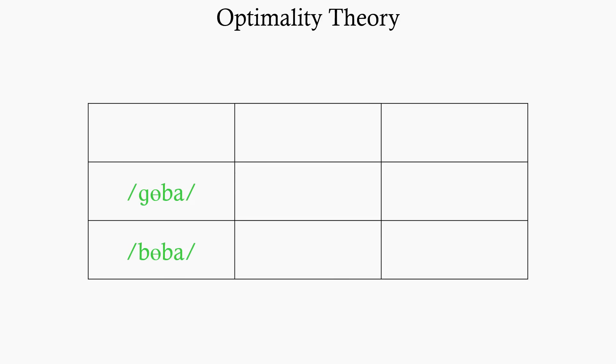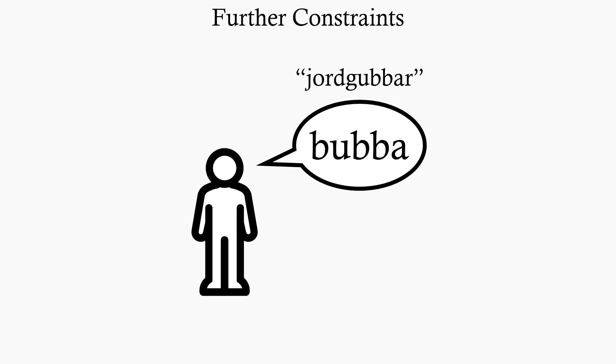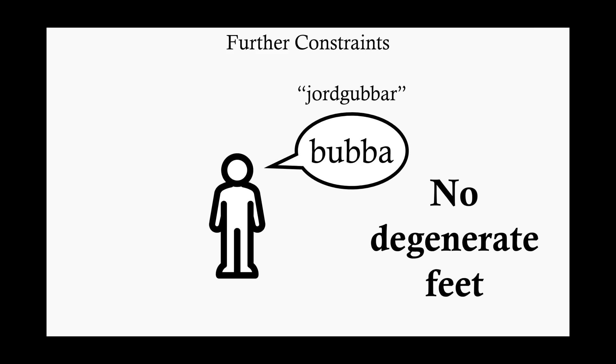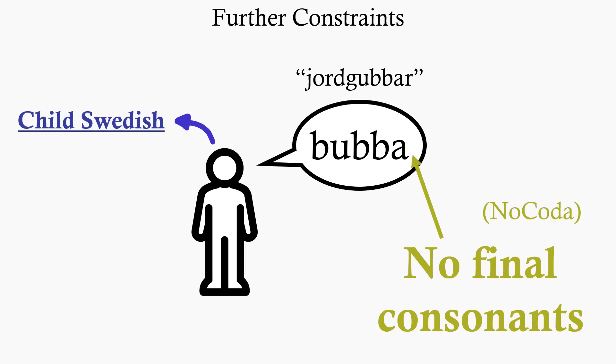In OT, we can use a table to model this, saying that there's actually a constraint in language against the use of every single sound. But the constraint against G for me at this age was ranked higher than the constraint on B, so saying Bubba was less bad than saying Guba. We can also see another couple potential constraints at play here. First, one against degenerate feet. I'm not going to explain that one, I'll just leave you with the knowledge that degenerate feet is a real linguistic term. And second, one against final consonants, a constraint we call no coda. In my child Swedish, I was just avoiding a final consonant at any cost, even if that meant deleting an element of the word.